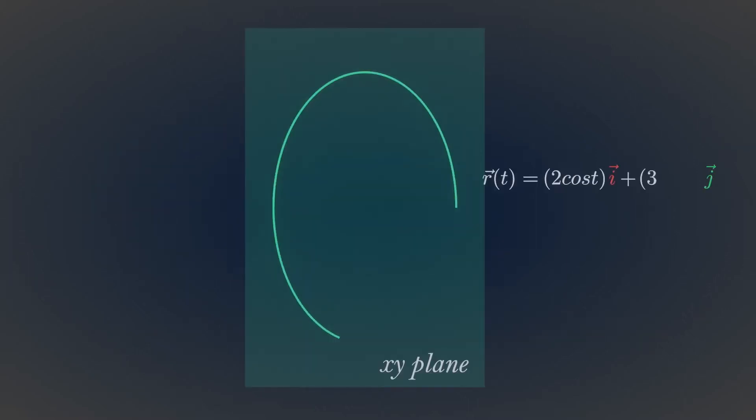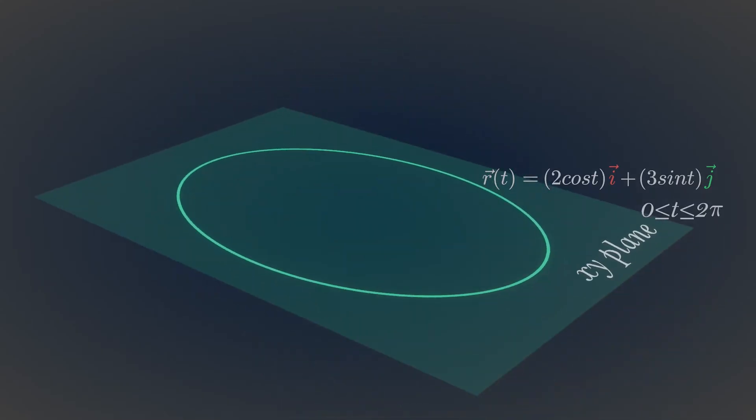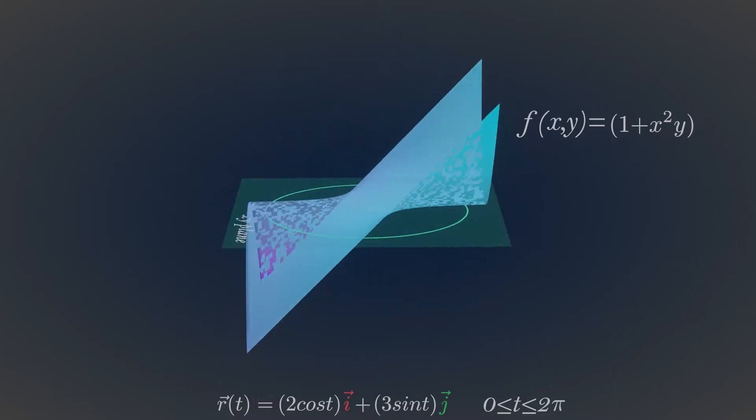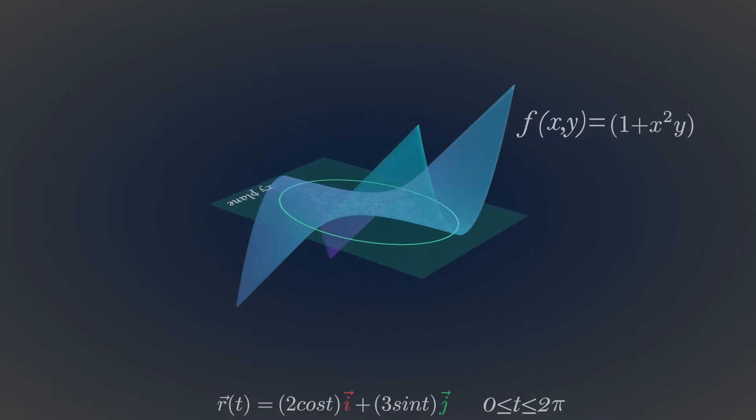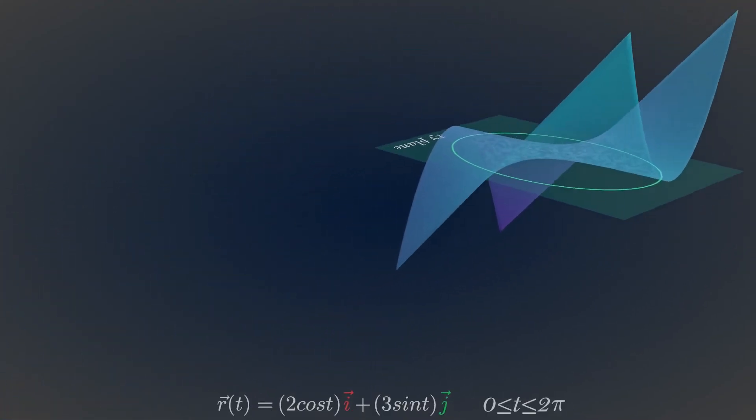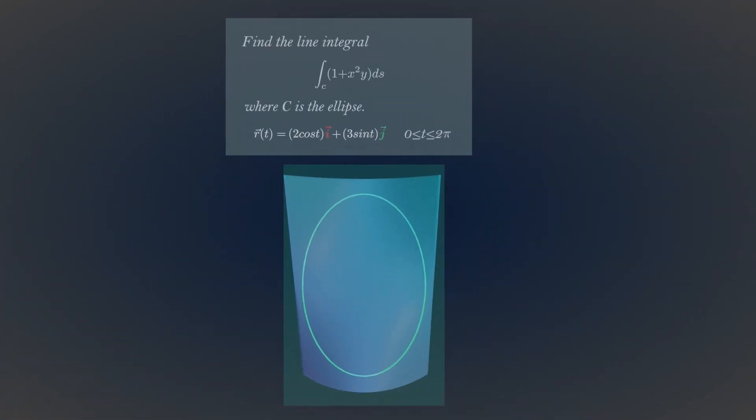Now, here is another example, a parametrized ellipse in the xy plane. This time, let's draw a surface that surrounds this ellipse. As you can see, this surface surrounds our ellipse in all ways. Let's try to solve this line integral problem.